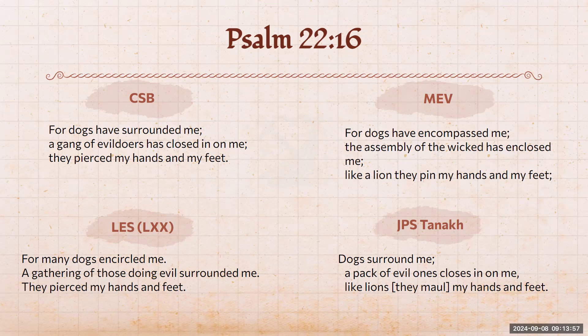So what is going on? Why do we have 'they pierced my hands and feet' in almost all English translations, but 'like a lion, my hands and feet' in the Hebrew? That's the difference we're looking at — 'they pierce' or 'like a lion.' The words 'my hands and feet' are the same in both. Let me show you the Hebrew.